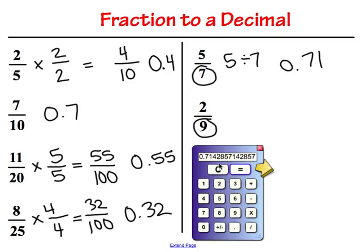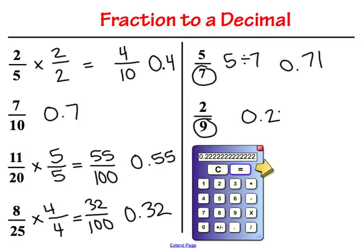Let's clear the calculator and try 2 ninths. We get 2 divided by 9 equals 0.2222222... and on. We're just going to round this to the hundredths place, so our answer is 0.22.